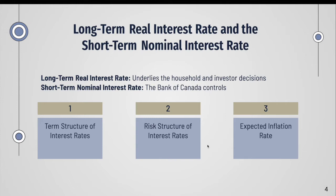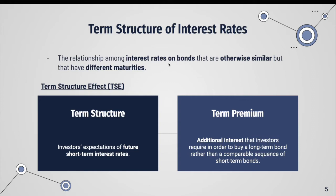The term structure of interest rates is the relationship among interest rates on bonds that are otherwise similar but have different maturities. For the term structure effect, this is where investors' expectations of future short-term interest rates matter.